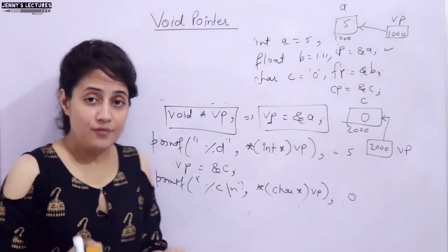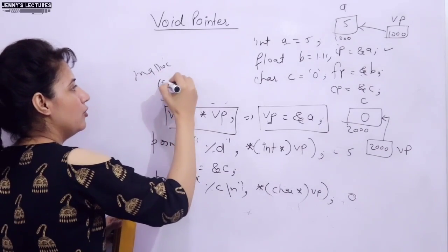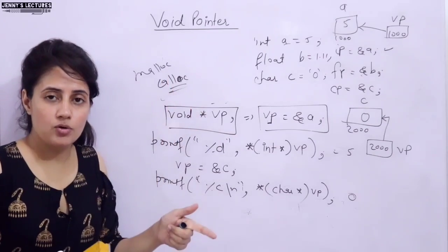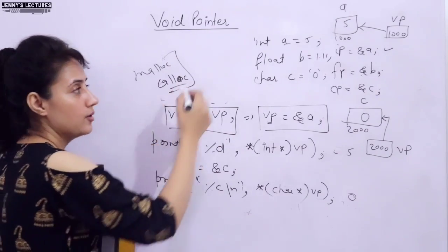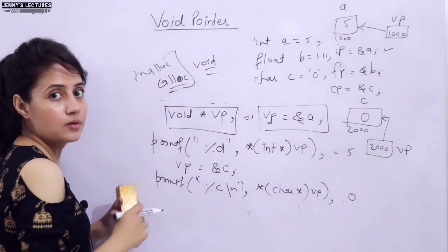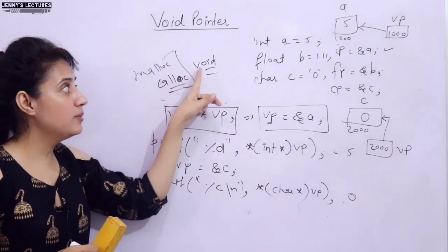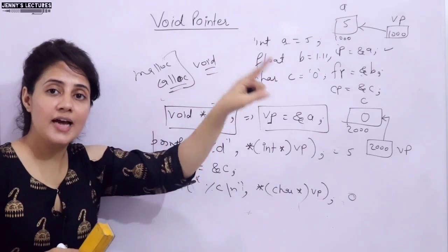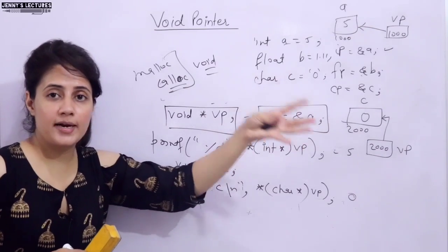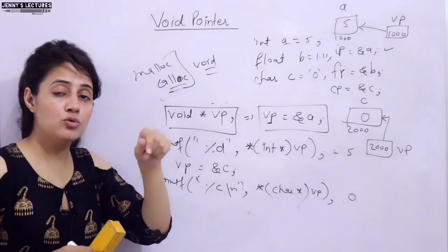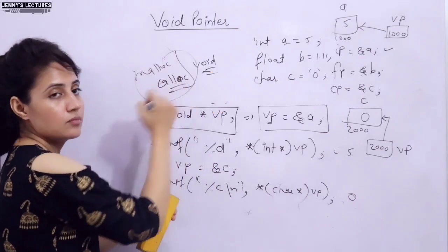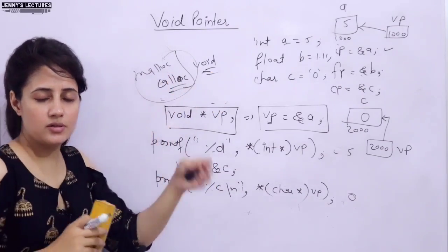One more thing — when we use malloc and calloc, which are built-in functions for dynamic memory allocation, they return a void pointer. When they allocate memory, they return a void pointer to that memory, so in that memory we can store any value — integer, float, or character. We will discuss void pointers in that context when we discuss dynamic memory allocation.